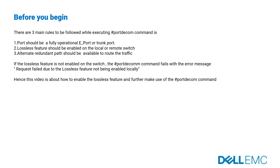There are three main rules to be followed while executing the port decommission command. First, the port should be a fully operational ePort or trunk port. Second, the lossless feature should be enabled on the local or remote switch. Third, an alternate redundant path should be available to route the traffic. If the lossless feature is not enabled on the switch, the port decommission command fails with the error message: "Request failed due to the lossless feature not being enabled locally." Hence, this video is about how to enable the lossless feature and further make use of the port decommission command.